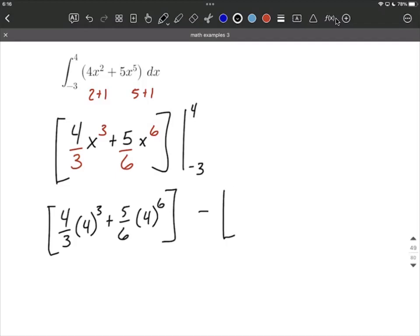And then from there, fundamental theorem of calculus says we also subtract and then replace each of the x's with our lower bound. So that's going to be 4 thirds, replace the x with negative 3 to the 3rd power, plus 5 sixths, replace the x with negative 3 to the 6th power. From here, that's the hardest part. We've done the integration. From here, it's just a bunch of simplifying down to finish this up.